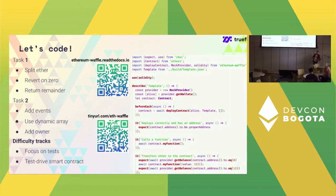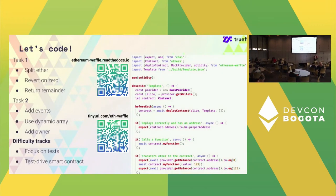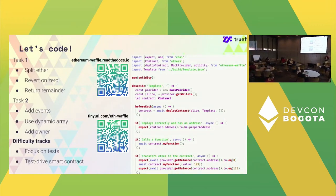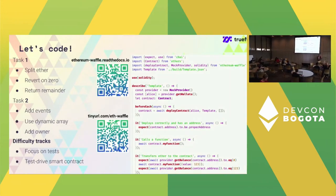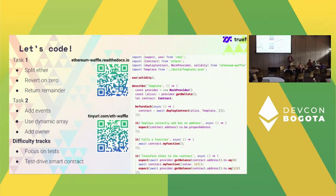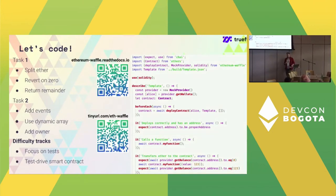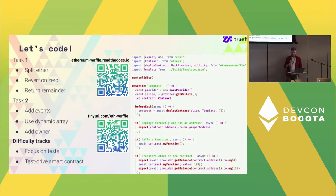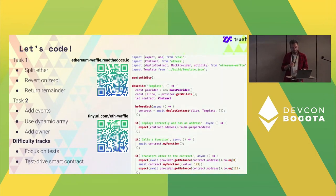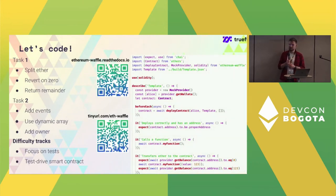On Vyper support: the only thing different for Waffle with Vyper is that you need a different compiler, but you end up with the same compilation products — bytecode going to the chain and the ABI. All the abstraction of wrapping calls with Ethers.js is the same for Vyper and Solidity. You just need to specify in the Waffle config that you're compiling Vyper rather than Solidity, and that should be it — it's in the documentation.